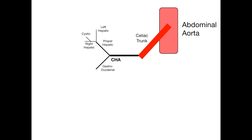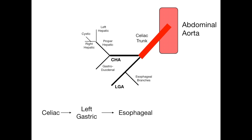The second of three major branches off the celiac trunk is the left gastric artery, abbreviated LGA. There is really only one major branch that comes off the left gastric artery, and those are branches going toward the esophagus — the esophageal branches. So the celiac trunk at T12 gives rise to the left gastric artery, which then gives rise to the esophageal branches.